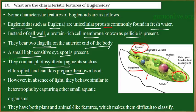However, in the absence of light, the process of photosynthesis does not take place. These organisms can switch to a heterotrophic mode of nutrition, where they capture and feed on small aquatic organisms to obtain nutrition. So Euglena is sometimes autotrophic and sometimes heterotrophic. This mode of nutrition is called mixotrophic.